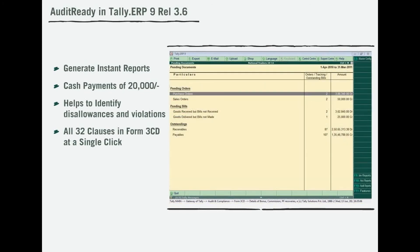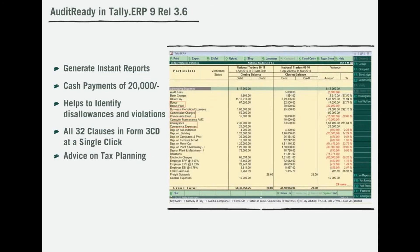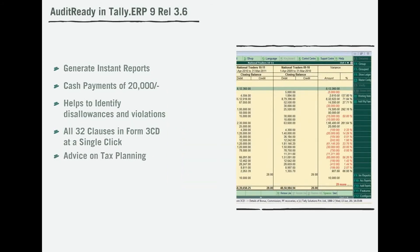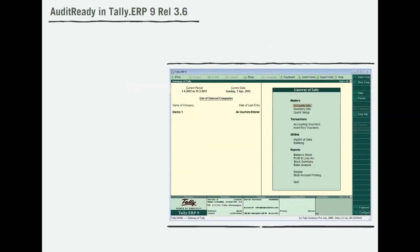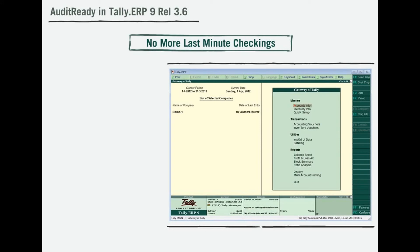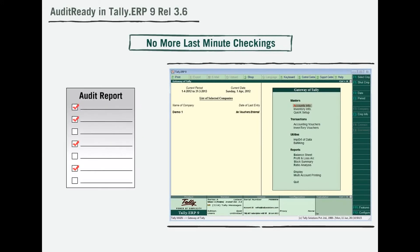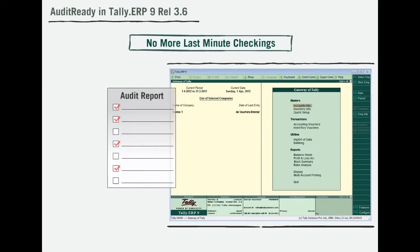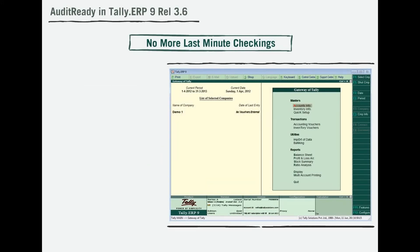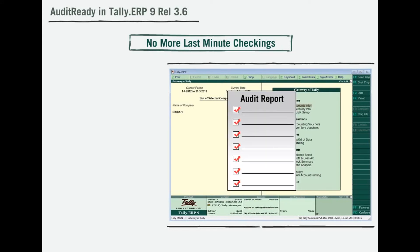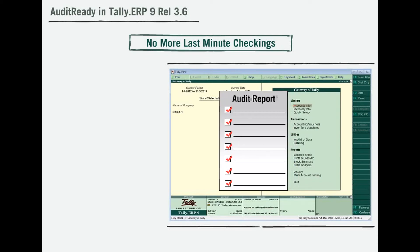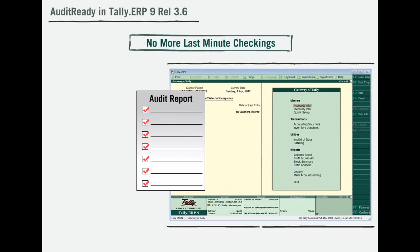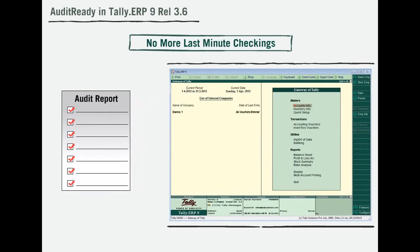Now, you can easily seek your auditor's advice on tax planning. What about last-minute finalizations resulting in exceptions in your accounts that escape your attention? With Tally ERP 9's audit-ready feature, you can conduct a self-audit and safeguard your books of accounts from any surprises and worries due to last-minute detection of errors and exceptions.